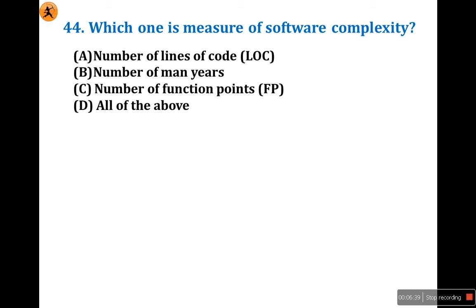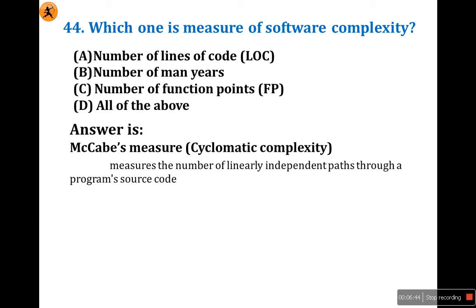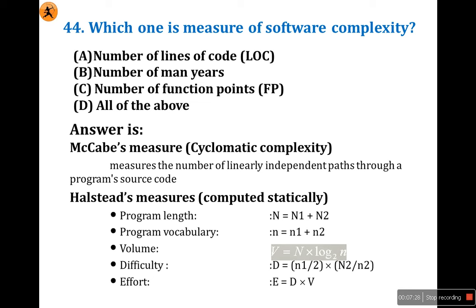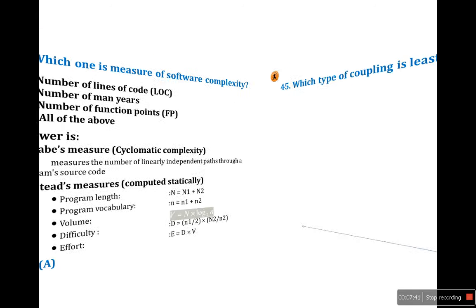Next question is a measure of software complexity. Software complexity is measured according to McCabe's measure — Cyclomatic complexity measurement — which measures the number of linearly independent paths through a program's source code, meaning how many lines of code there are. That is the complexity of the software. It is not function points, so the option is A. According to McCabe's measure and the Halstead metrics, these formulas are used to find software complexity. The number of lines of code is the software complexity, so option is A.